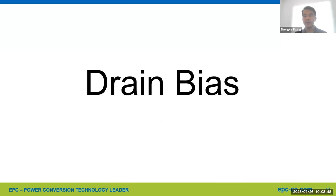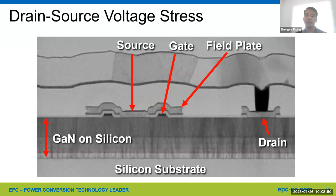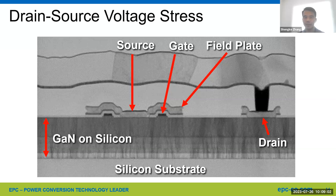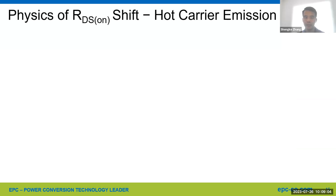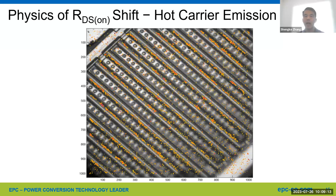Next: drain bias. Looking at the cross-section again, we can see drain contact, field plate, gate, and source contact. When devices are subjected to high drain bias, we observed a lot of hotspots using EMI — a common failure analysis technique. Those hotspots suggest that electrons were accelerated by the high electric field and became hot carriers.